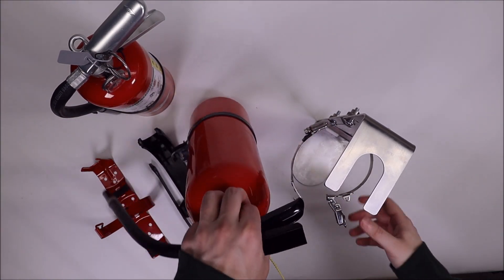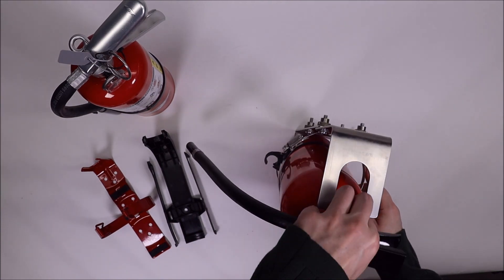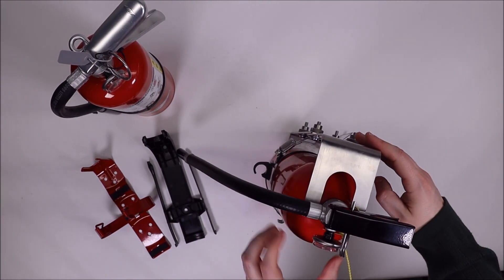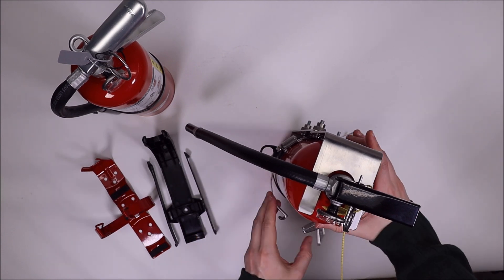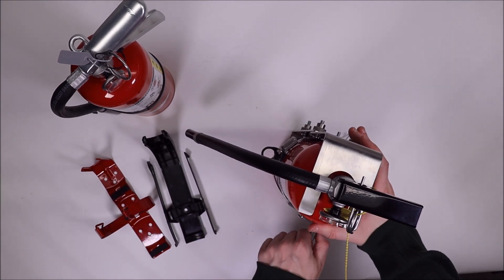You take your extinguisher, slide it into the bracket. You want the neck of the extinguisher in the retaining bracket here. And then you simply close the latch around the cylinder.